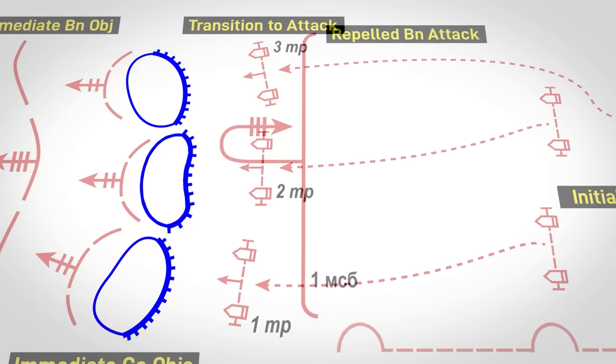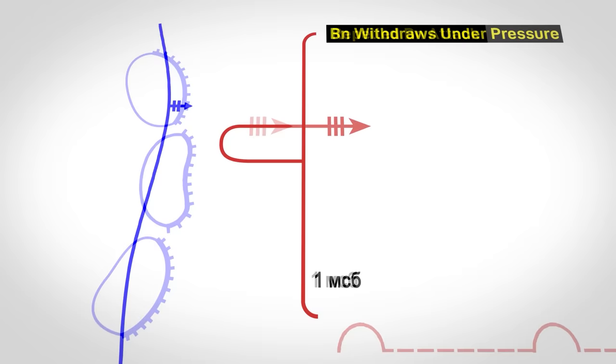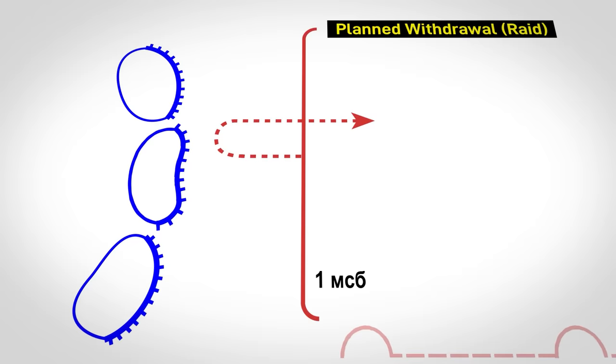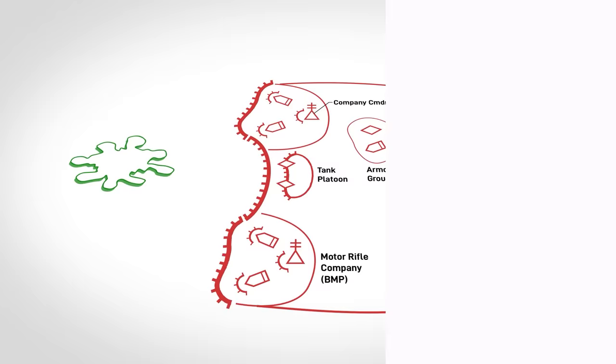If an attack is repelled, it's depicted after the fact by an arrow doing an about-face. And if a withdrawal is forced, that line continues beyond the friendly front line. If the unit plans to withdraw from the start, like during a raid where terrain is not held, that withdrawal line can be dashed.